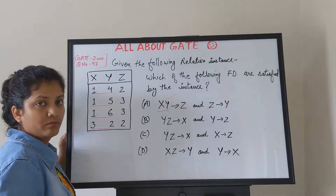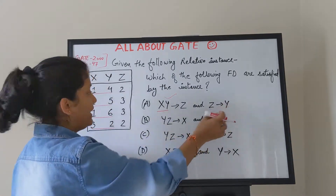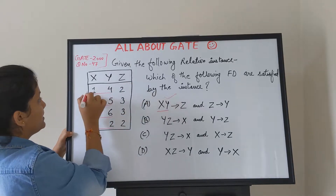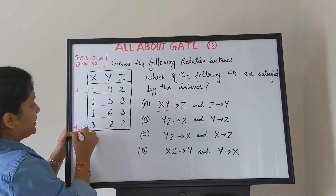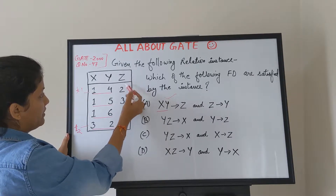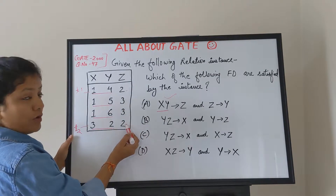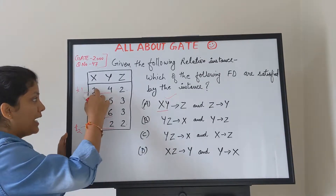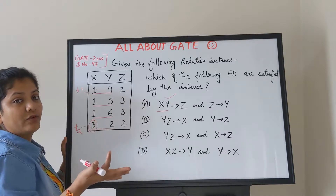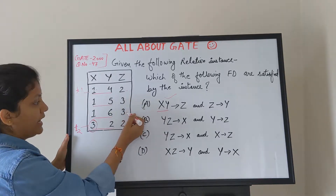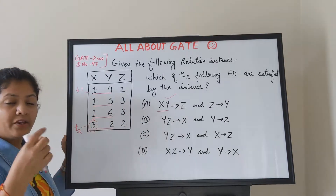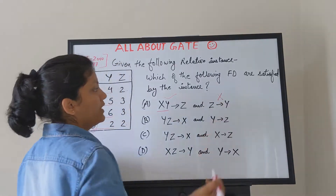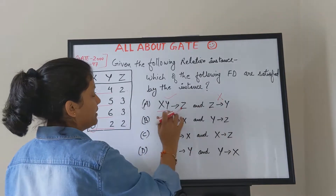Now check Z → Y: Z values are 2, 3, 3, 2 — the value 2 is repeated. Take those two tuples t1 and t2 where Z=2. For t1 the Y value is 1, but for t2 the Y value is 3 — they differ, so this is a violation. Similarly for Z=3: Y values are 5 and 6, which differ. Z → Y is violated.